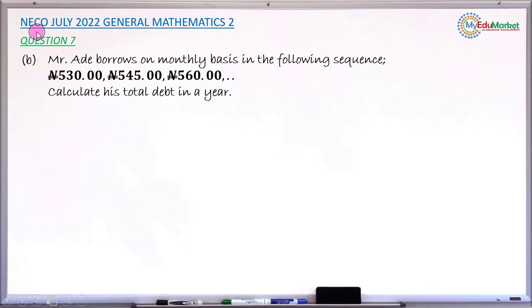This is NECO July 2022 General Mathematics Paper 2 and we are answering question number 7B. Mr. Ade borrows on monthly basis in the following sequence: first month is 530 Naira, second month is 545 Naira, and third month is 560 Naira and so on.